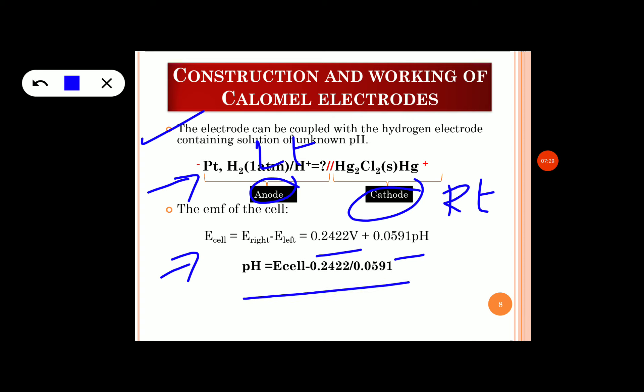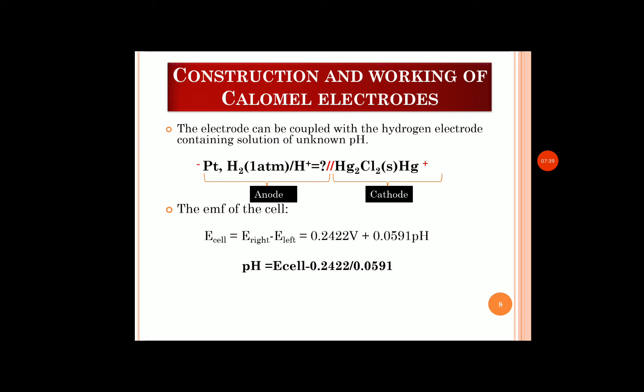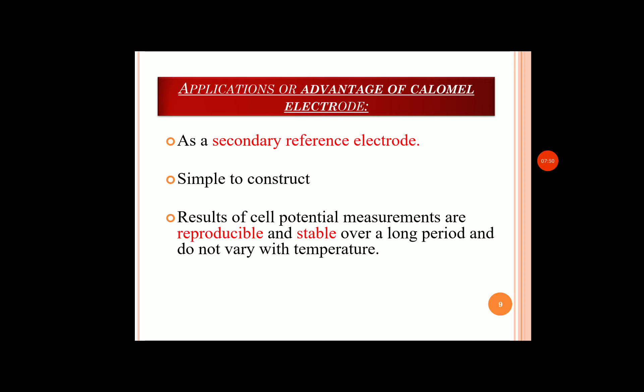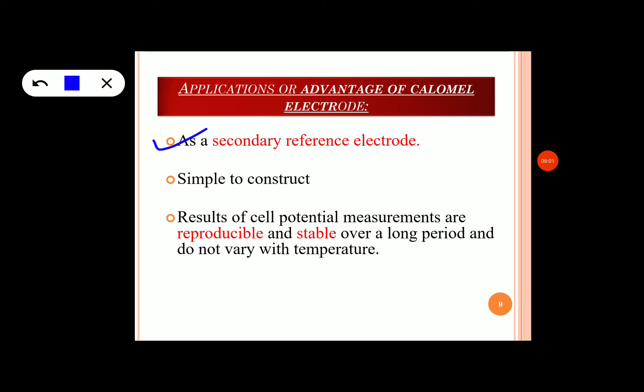The calomel electrode can be used as a reference electrode and is very easy to use in the laboratory. Its advantages are: first, it can be used as a secondary reference electrode and is very simple to construct; second, the cell potential measurements are reproducible and stable; and third, the cell potentials are reproducible and stable over a long period and do not vary significantly with temperature.